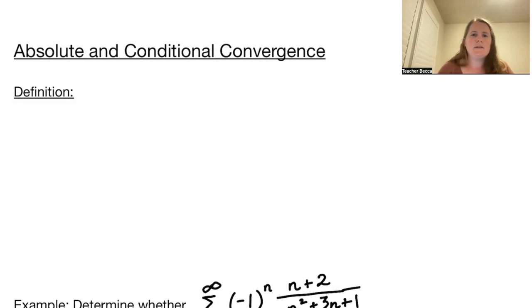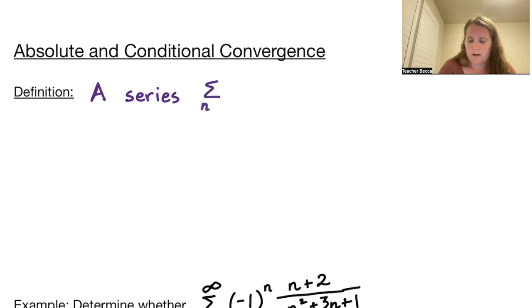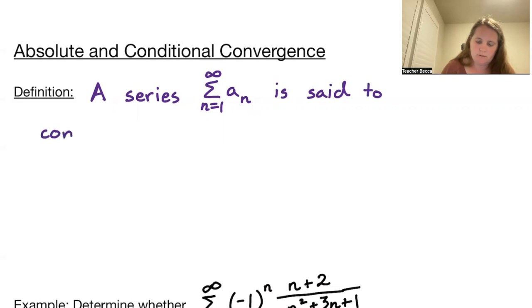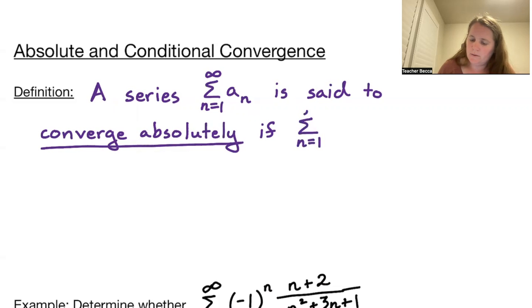Welcome to absolute and conditional convergence. A series, the sum from n equals 1 to infinity of a sub n, is said to converge absolutely if the series from n equals 1 to infinity of the absolute value of a sub n converges.